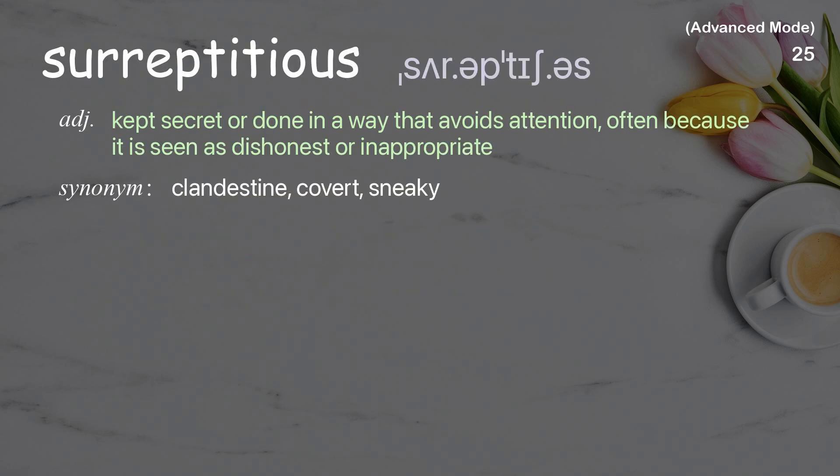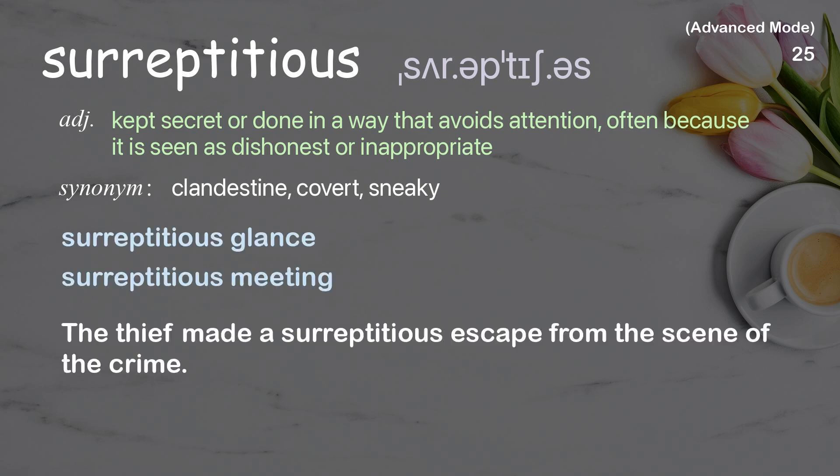Surreptitious: kept secret or done in a way that avoids attention, often because it is seen as dishonest or inappropriate. Examples: surreptitious glance, surreptitious meeting. The thief made a surreptitious escape from the scene of the crime.